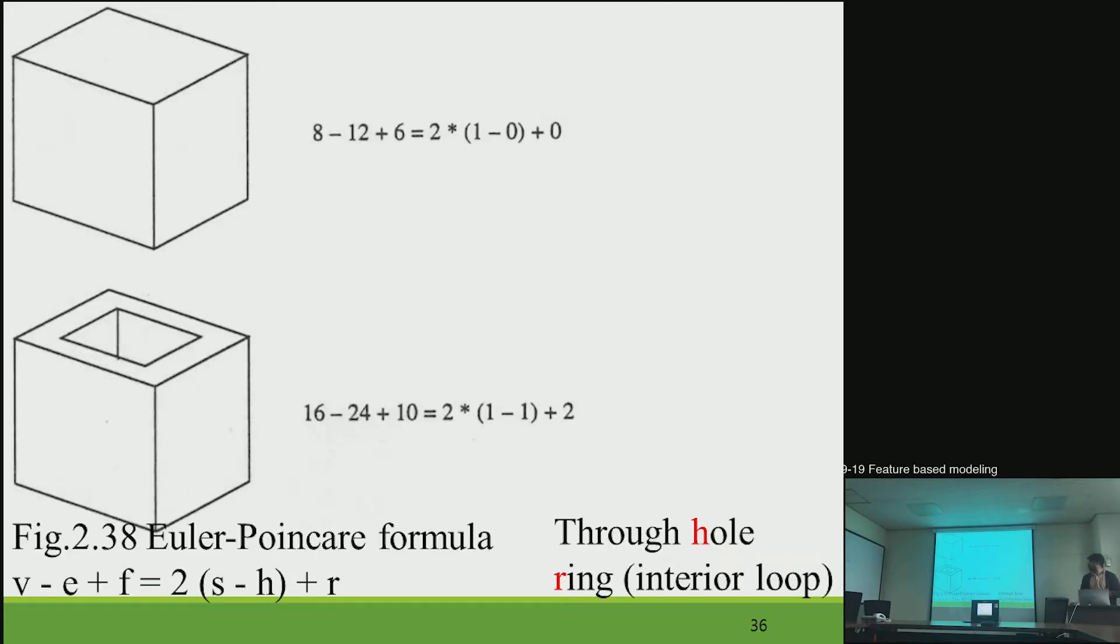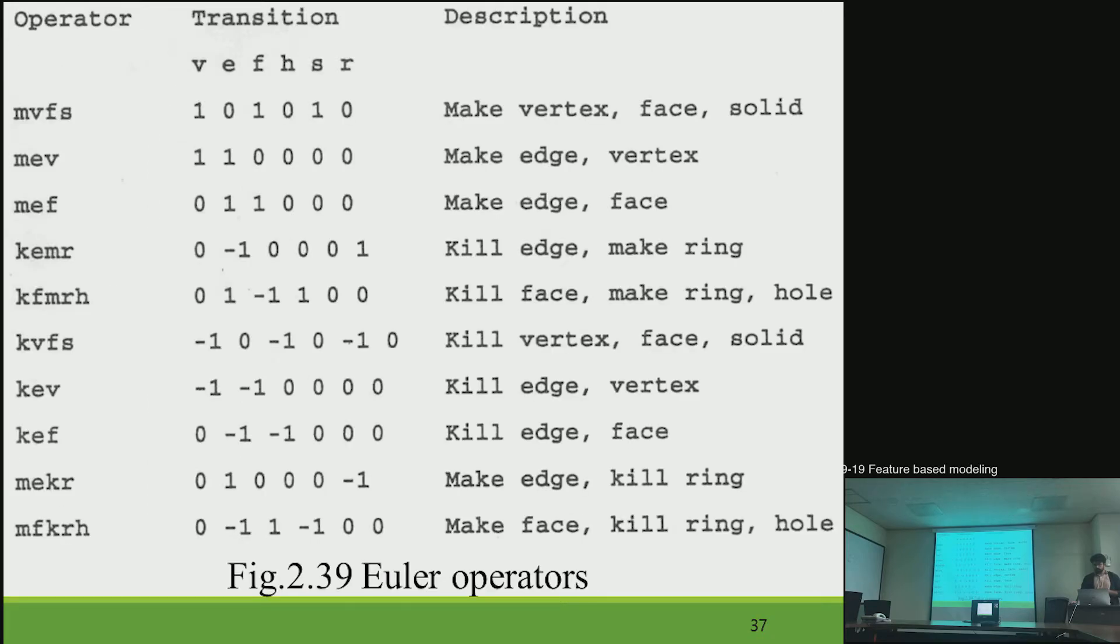And last point is about Euler-Poincaré formula or the objects that are based on Euler operations. They are always topologically valid.